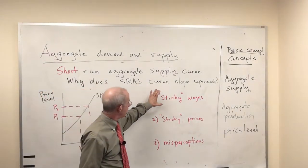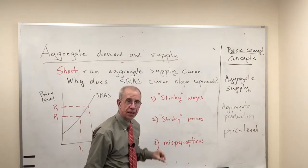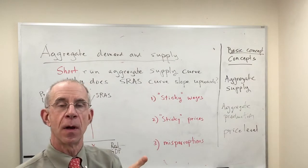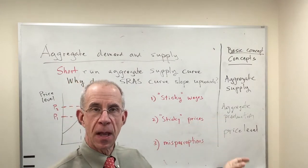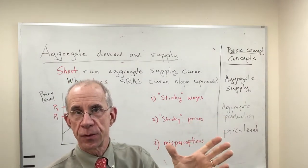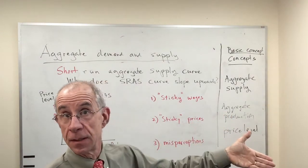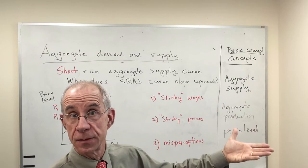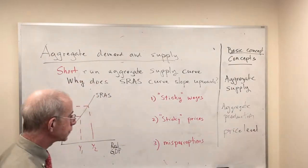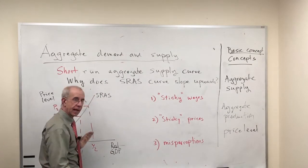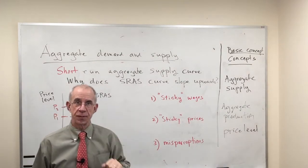Bottom line, with both sticky wages and sticky prices, the price mechanism is not really functioning well to get supply and demand equal to each other and you've got some actions at the macroeconomic level as a consequence. So these are two reasons why that short-run aggregate supply curve slopes up.